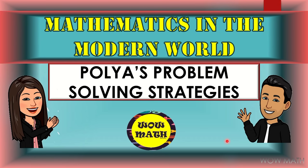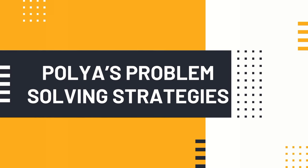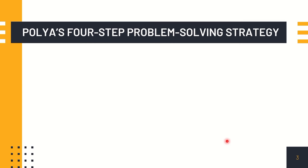Hello everyone, so in this video we are going to discuss Polya's problem solving strategies. He is one of the foremost recent mathematicians to make a study of problem solving, George Polya. He was born in Hungary and moved to the United States in 1940. The basic problem solving strategy that Polya advocated consisted of the following four steps.